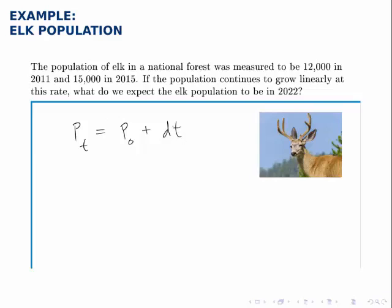The other piece we need to find is D, the growth rate. The way we do that is to note that in those four years, the population grew by 3,000. So each of those years, it grew by a fourth of that.